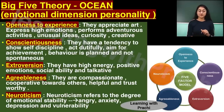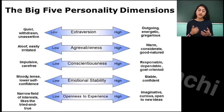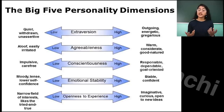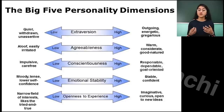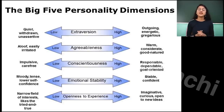Looking at the Big Five personality dimension chart: in openness to experience, if high — imaginative, curious, open to new ideas; if low — narrow field of interest, likes the tried and true. Emotional stability: high means stable and confident, low means moody with lower self-confidence. Conscientiousness: responsible, dependable, goal-oriented if high; impulsive and carefree if low. Agreeableness: warm, considerate, good-natured if high; lonely and irritable if low. Extroversion: outgoing, energetic, and gregarious if high; quiet and withdrawn if low.